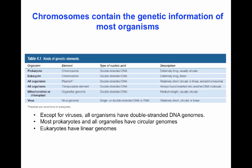Organelles in eukaryotes also contain double-stranded DNA elements that are circular, as opposed to the linear chromosomes of the cell. Viruses, on the other hand, are the only entities that have genetic material that is not double-stranded DNA. They have either single or double-stranded DNA or RNA as genome, and it can be either circular or linear.